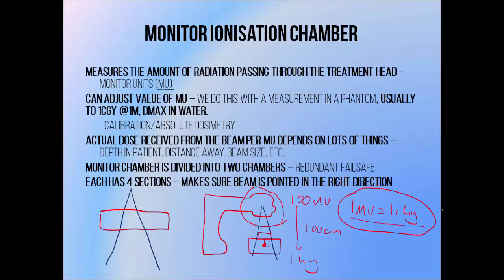Linear accelerators need to use monitor chambers because the rate at which they produce radiation isn't constant over time. So we can't just say we'll leave the beam on for a minute, because we can't accurately know how much dose will come out the other end during that time, the way we would with a radioactive source or a superficial x-ray unit. Determining how much radiation to deliver in terms of monitor units is quite accurate even with an inconsistent dose rate, which is why linear accelerators use monitor chambers when isotope units and many superficial units do not.